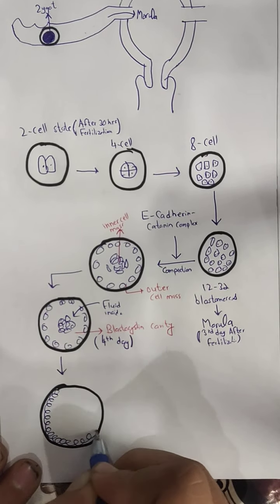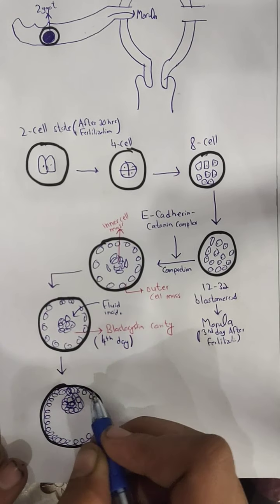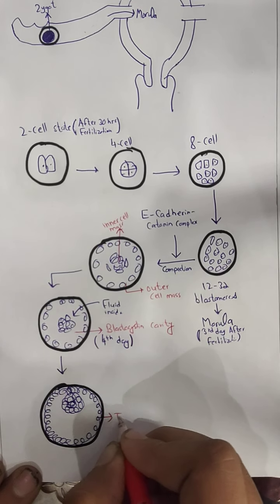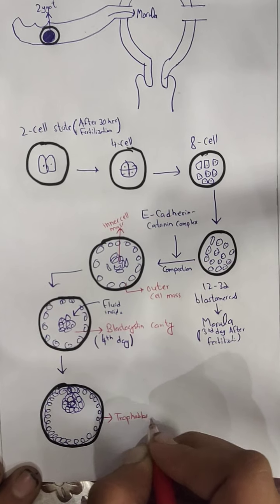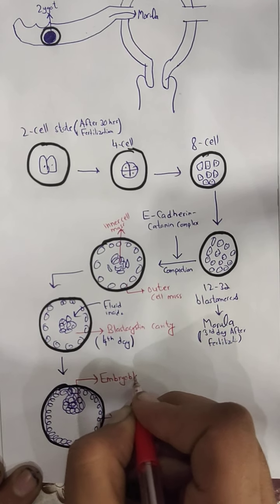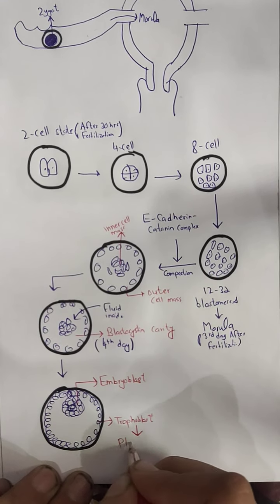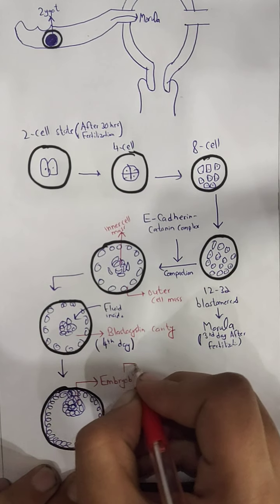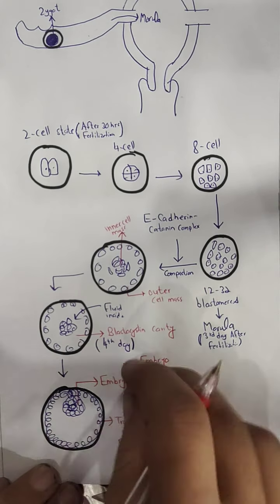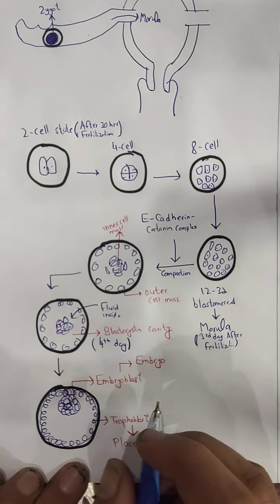We can see the outer cell mass and the inner cell mass. The outer cell mass will form the trophoblast, and the inner cell mass will form the embryoblast. In the future, the trophoblast will ultimately form the placenta, and the embryoblast will ultimately form the embryo.